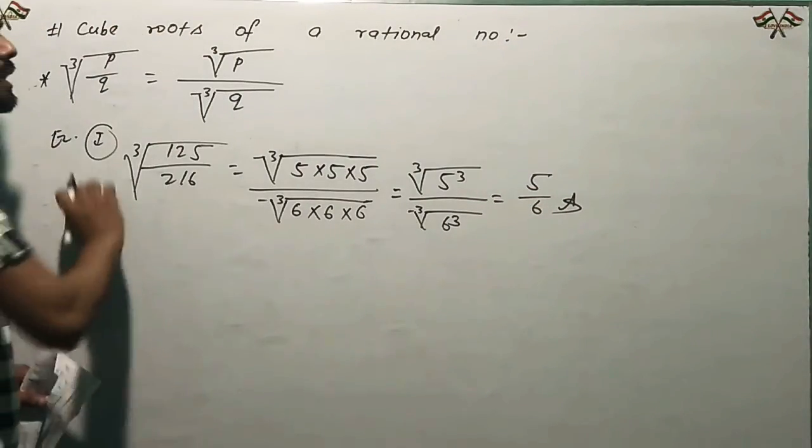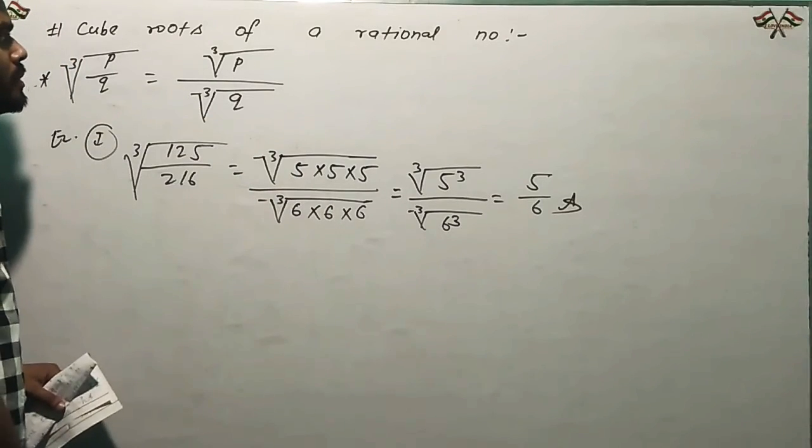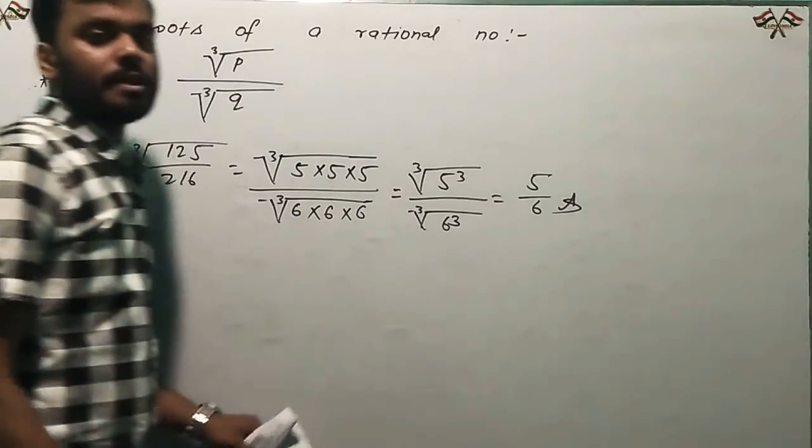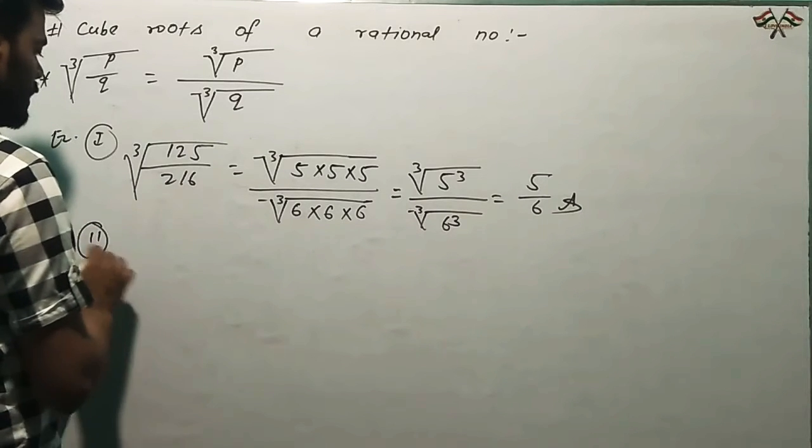So what we've seen is how to find cube roots of rational numbers. These are some other examples of rational numbers. Again, let's take another example.